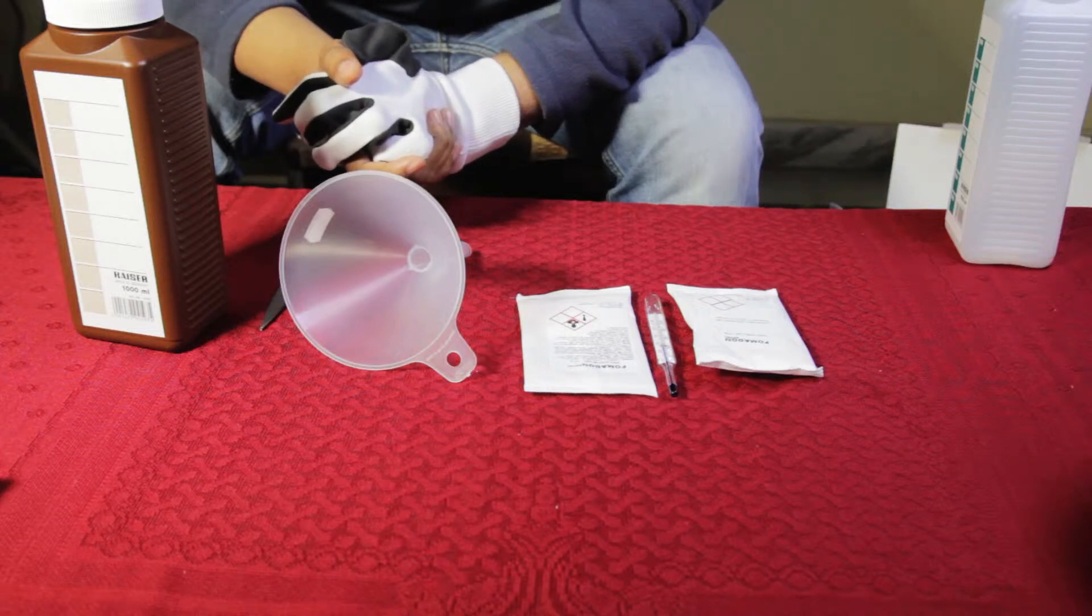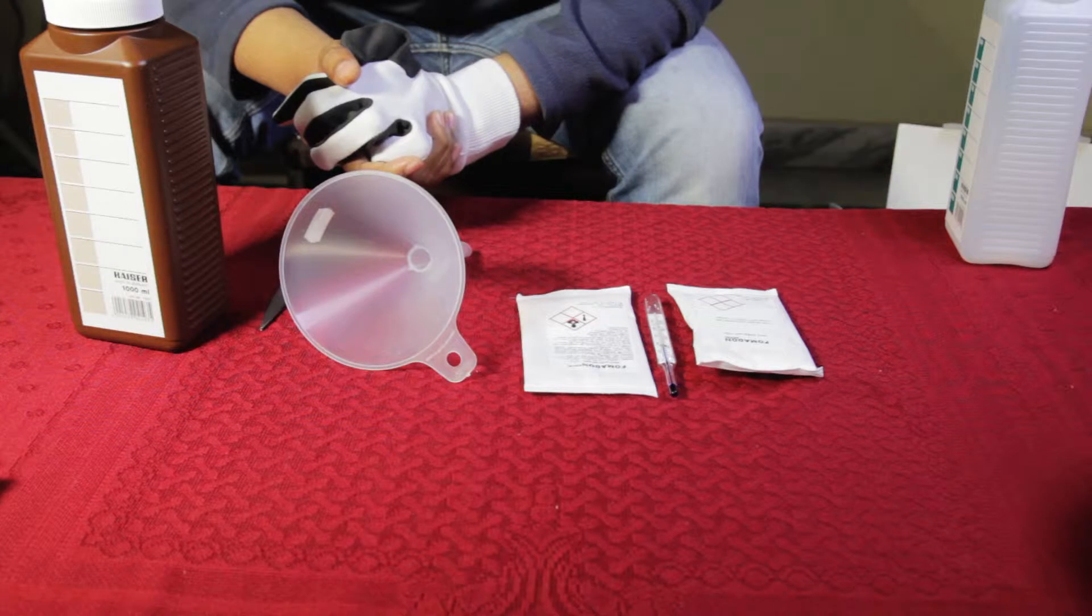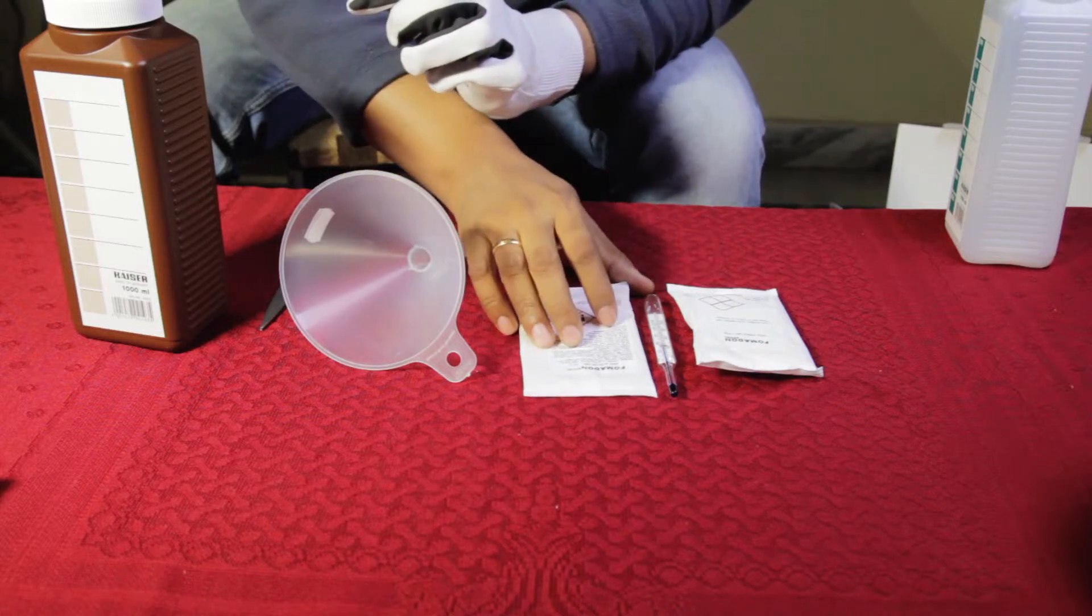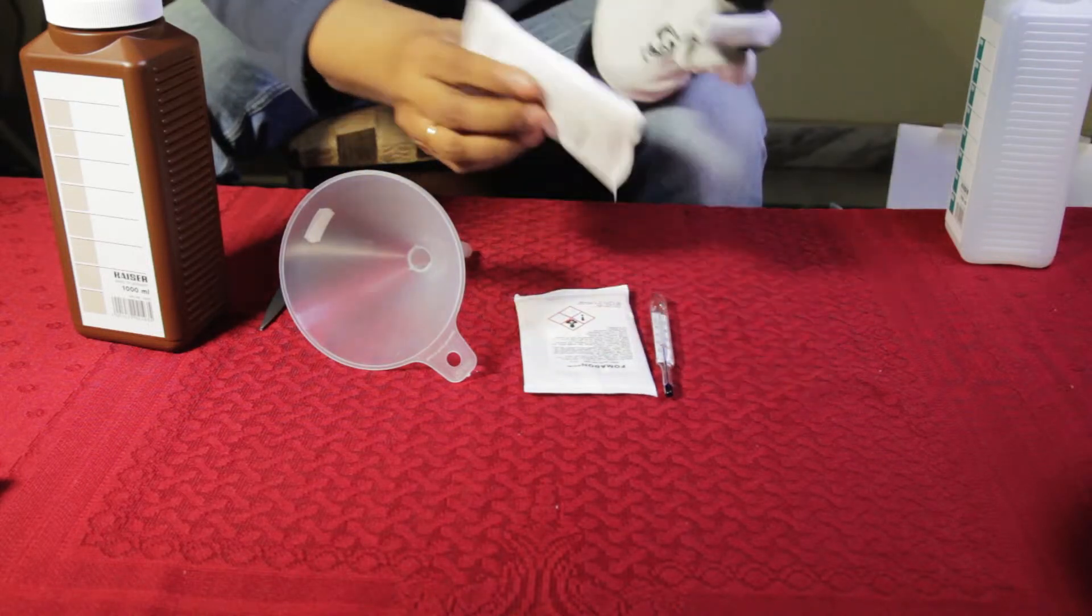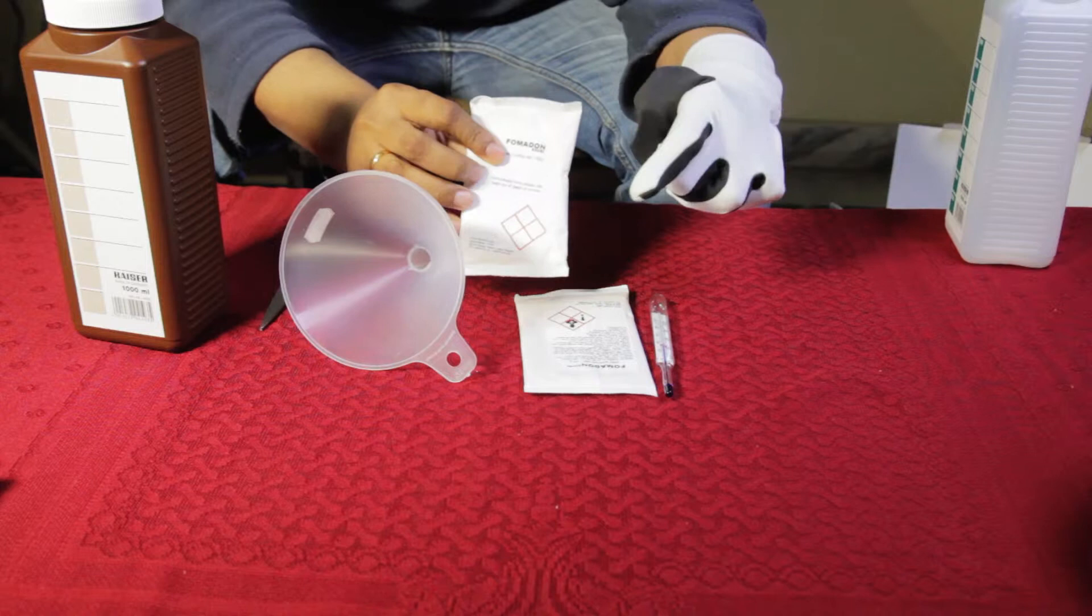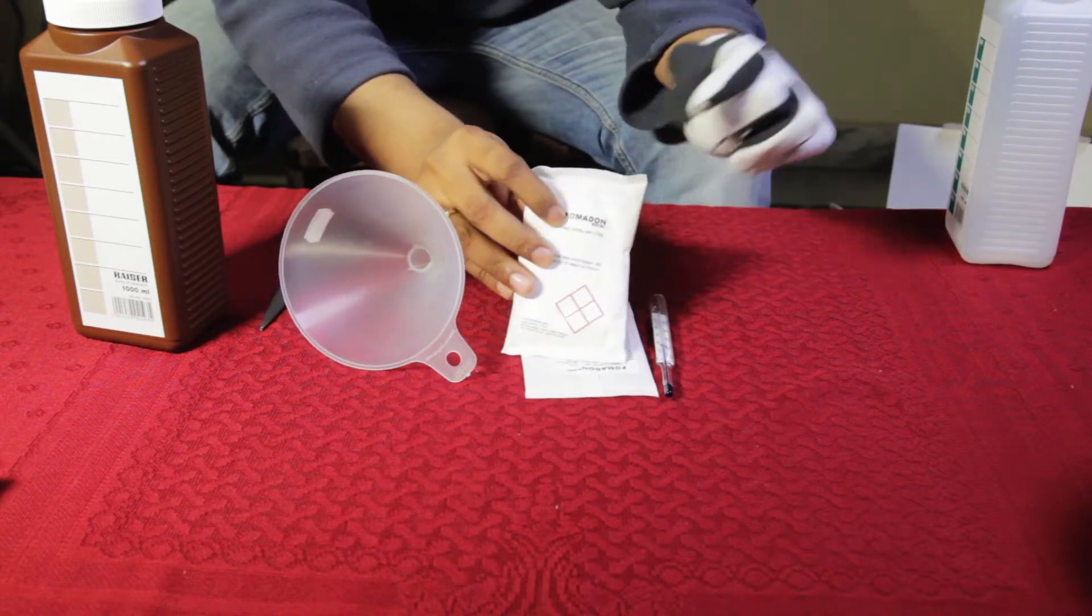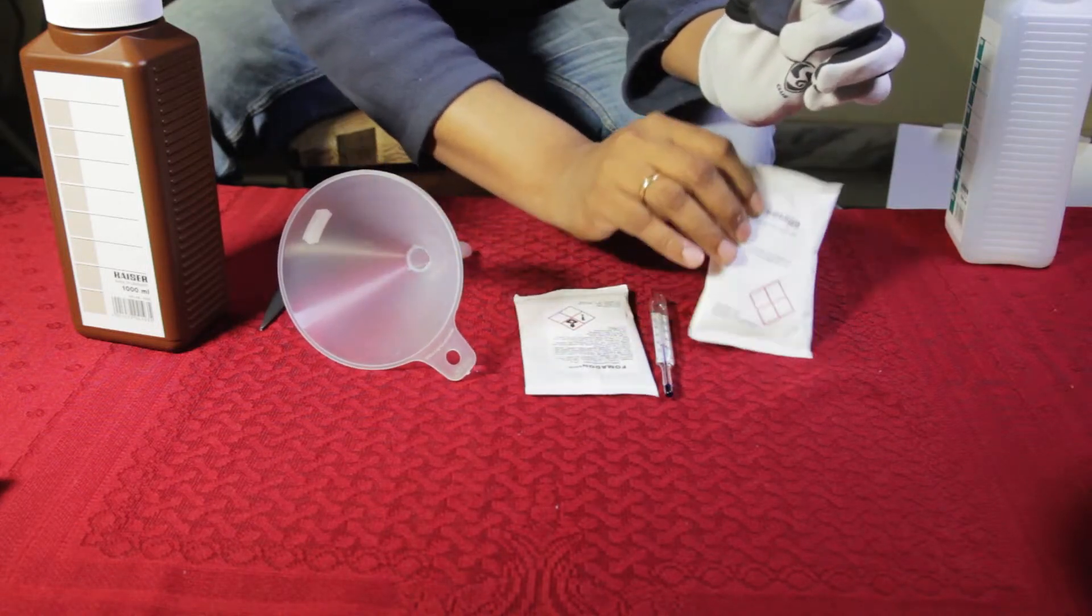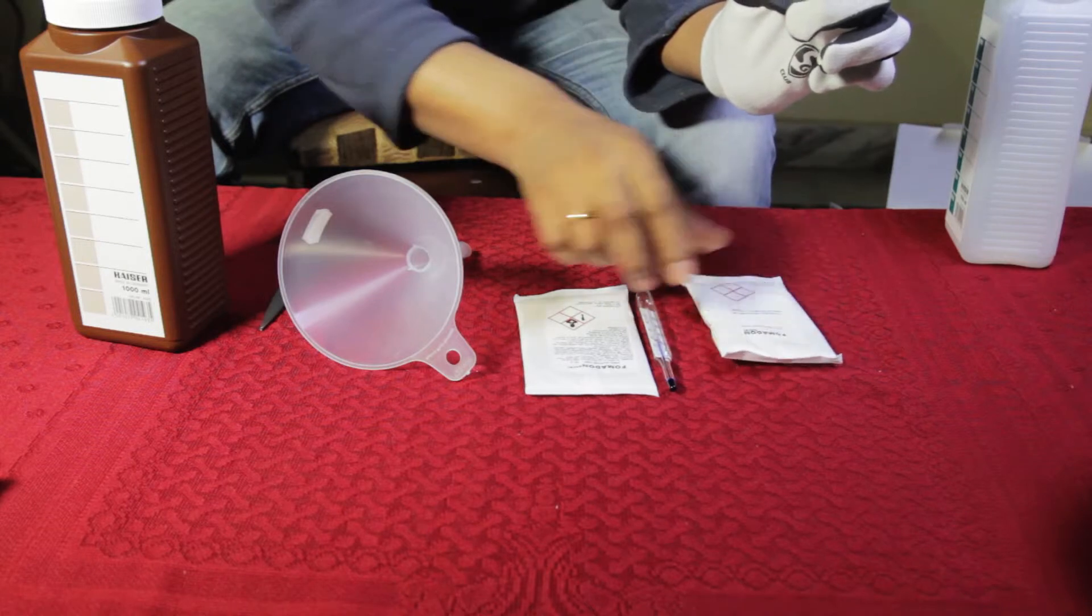Hey guys, this is Arthur here with fstopdiary.com and today I'm gonna prepare a black and white film developer which is the Fomadon XL. I have the concentrate here, the Fomadon XL concentrate, and from this I'm gonna prepare one liter of black and white film developer.